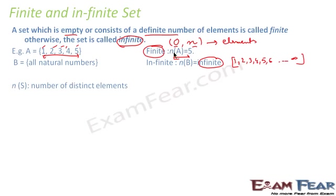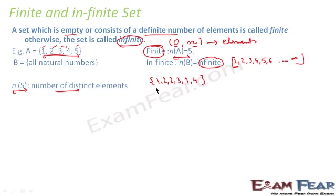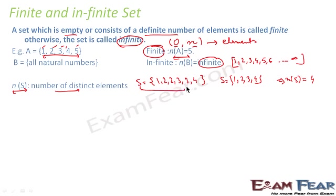We use the notation n(S) to mean the number of distinct elements in a set S. For example, if a set is {1, 2, 2, 3, 3, 4}, duplicates are not counted — the distinct elements are 1, 2, 3, and 4. So n(S) = 4. In roster form, duplicates are avoided, so the same set is written as {1, 2, 3, 4}.